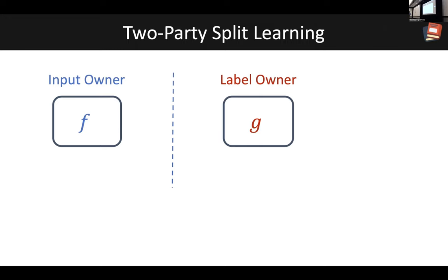To address this challenge, people have put forth what's called the split learning framework. As the name suggests, instead of having a single model, split learning tries to have a composition of two models distributed across the two parties — the input owner and the label owner. In this example, we have two models, F and G, that are distributed between the two parties.